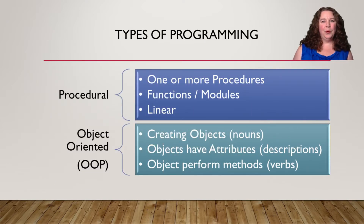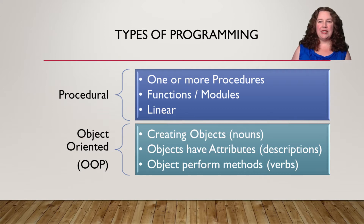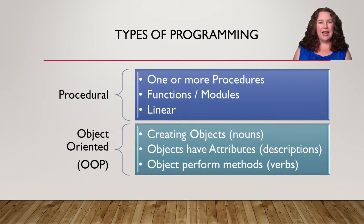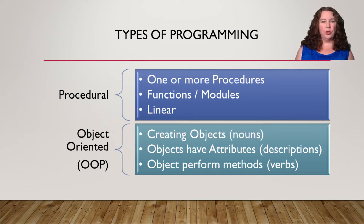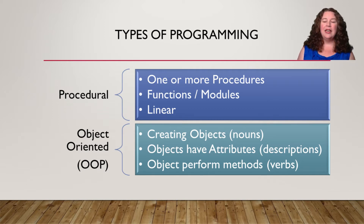When we talk about programming, we generally refer to one of two different types. The first is the programming we've been doing up to this point, which is procedural. Usually it has one or more procedures or functions, usually uses modules, and it's linear. It starts from the top and sequentially goes down to the bottom, and everything is in order. Even if we go into a function, we linearly go down the function and then come back out. Everything's in a nice line.